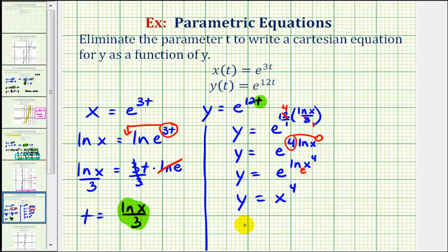So y as a function of x would be y of x equals x to the fourth. Actually, either of these forms are acceptable. This just emphasizes that we do have y as a function of x.